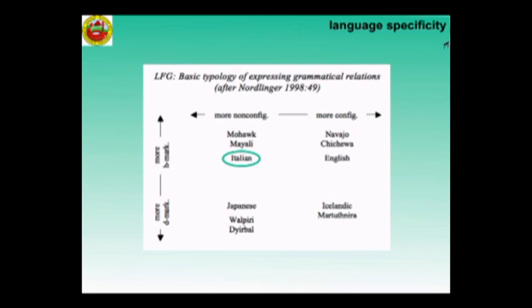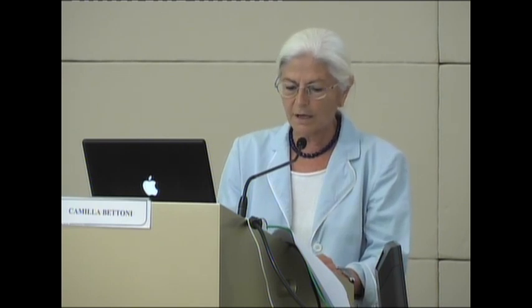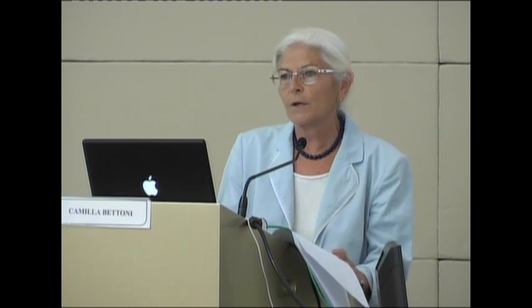Configurational languages express F structure information by position. Non-configurational languages express it by morphology, mainly. The second distinction is morphological, and it's between more head-marking and more dependent-marking languages. Head-marking languages indicate grammatical relationships inflectionally on the head element; the others indicate them inflectionally on the dependent element. Italian is a more non-configurational language which marks morphologically the head rather than the dependents.